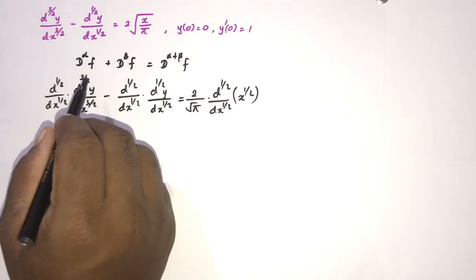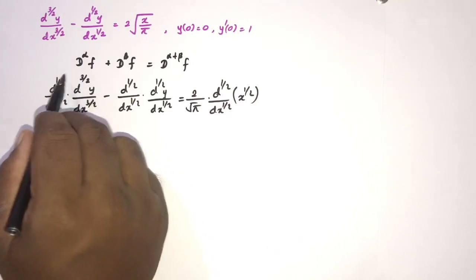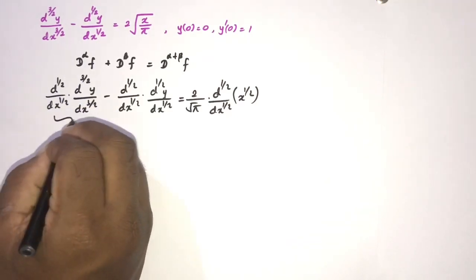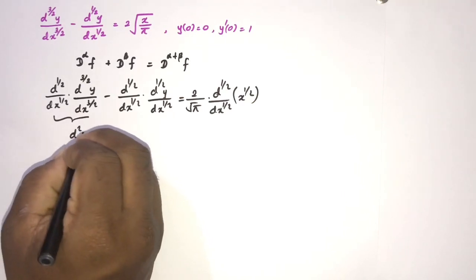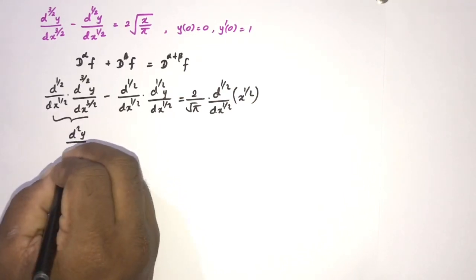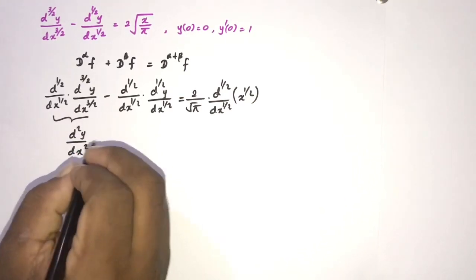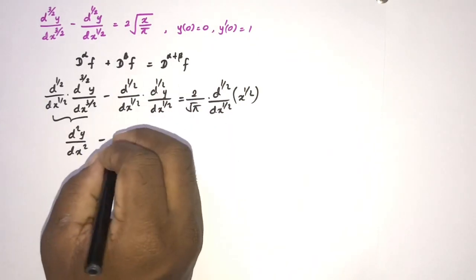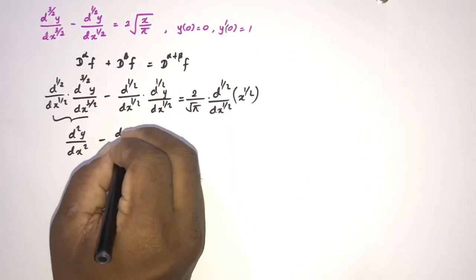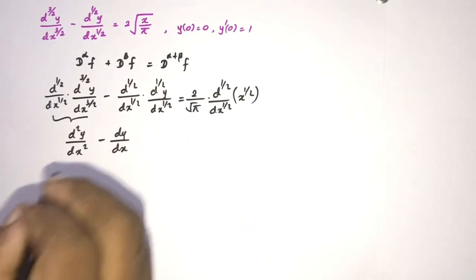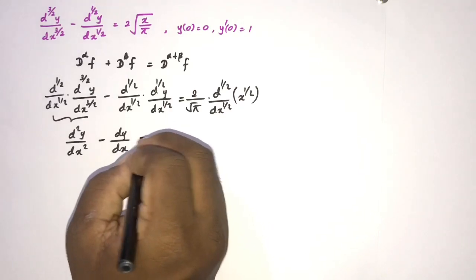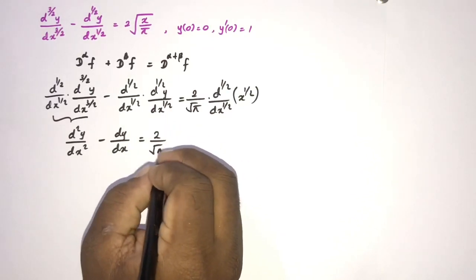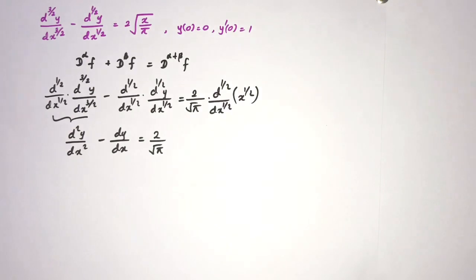According to the composition formula, 1/2 + 3/2 = 4/2 = 2, so the first term becomes d²y/dx². And 1/2 + 1/2 = 1, so the second term becomes dy/dx. The right-hand side becomes (2/√π) times the half derivative of x^(1/2).